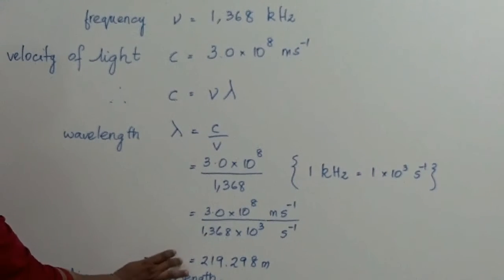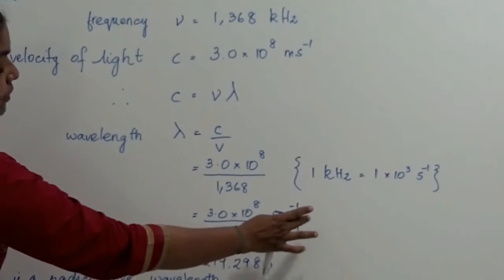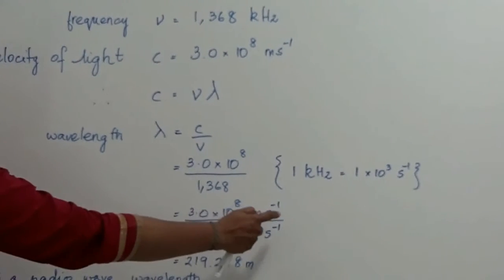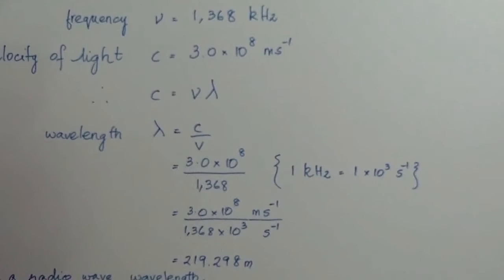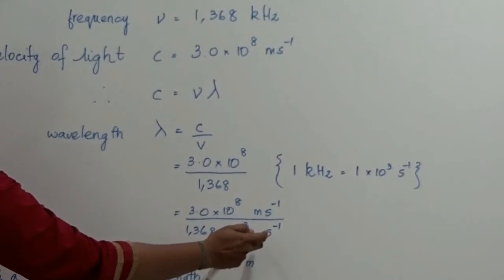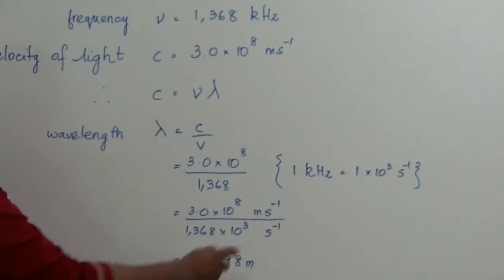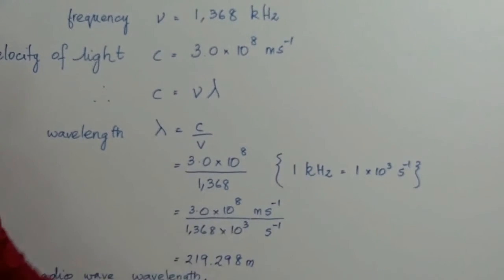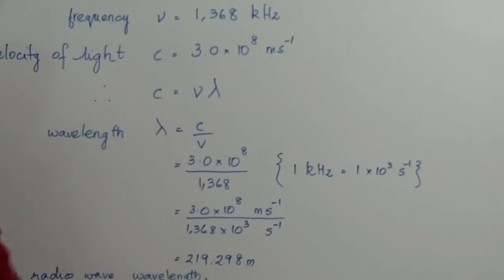You calculate and get the answer. Here, you have the units for velocity as meter per second and for the frequency as per second. You cancel second and second and you are left with meter. So, the unit has come correctly.